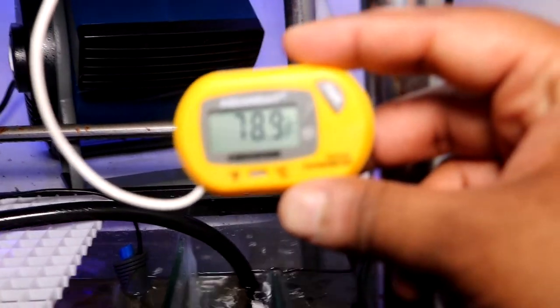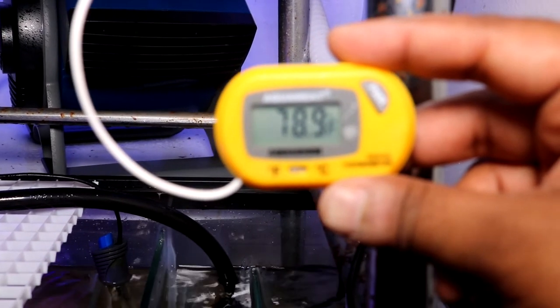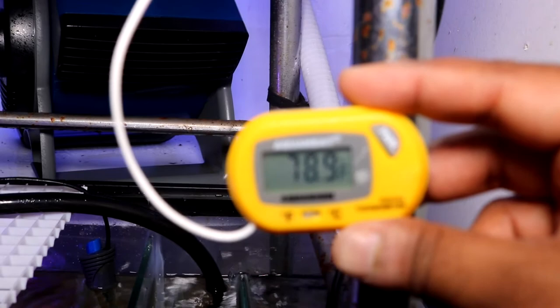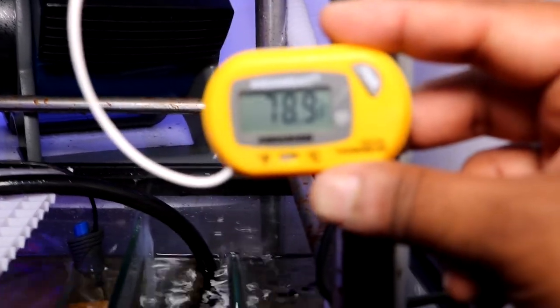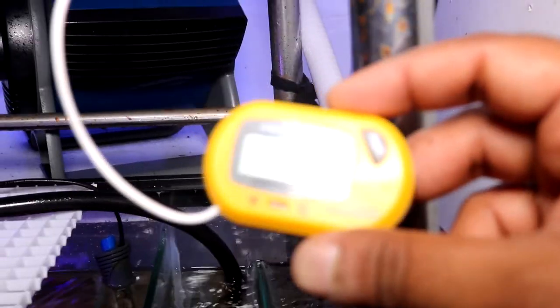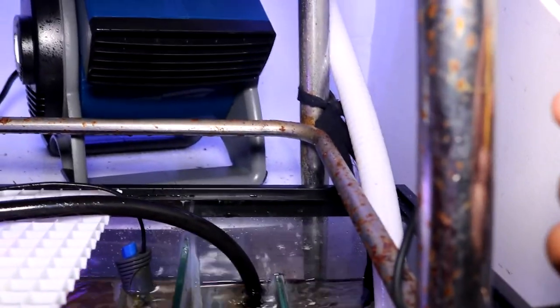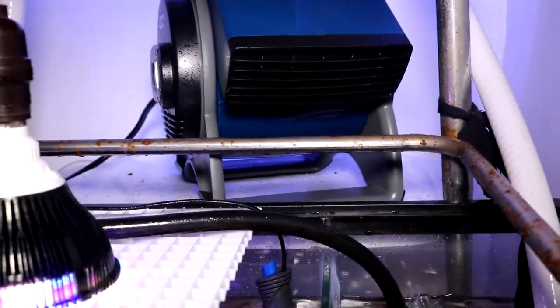Let me show you guys the temperature right now. It's at 78.9 degrees Fahrenheit, and the probe for this thermometer is actually inside my display tank because that's where I want to know the temperature. The fan is doing its job. Does the temperature fluctuate throughout the day? Yes, probably during midday it goes up to about 80 or 81 degrees, but usually it stays where I need it to stay.